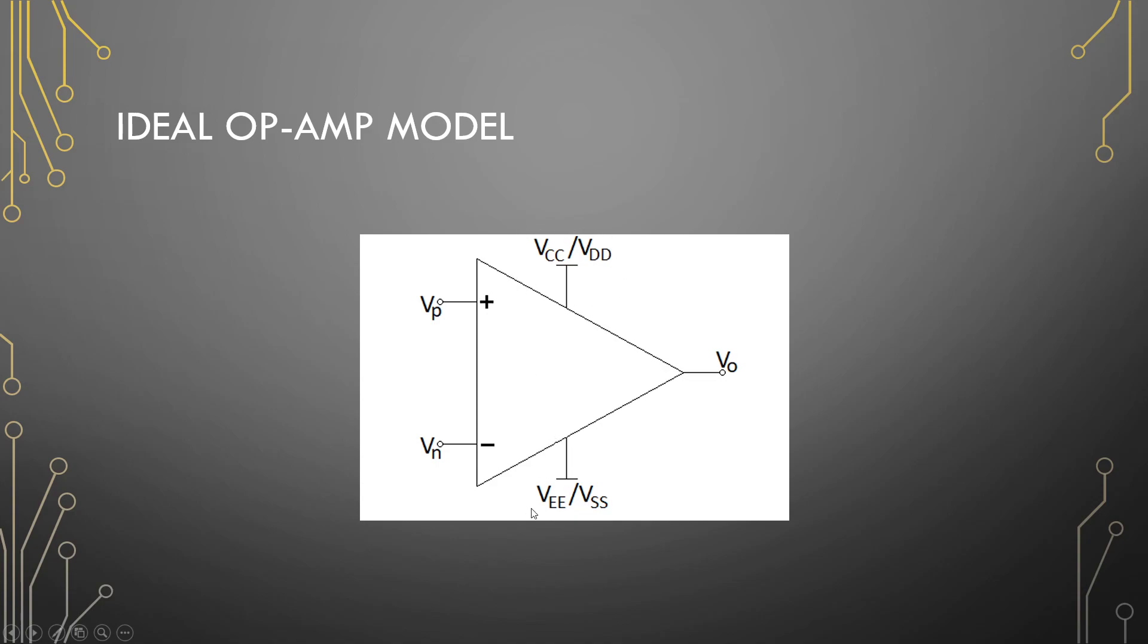Op-amp also has power rails. VCC and VDD that is a positive rail. VCC if it's a bipolar op-amp and VDD if it's MOSFET based. Same VEE and VESS, this is either the negative rail or where you will add a ground if it's a single rail op-amp.